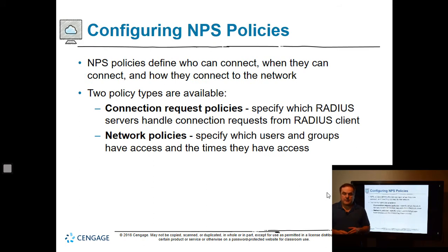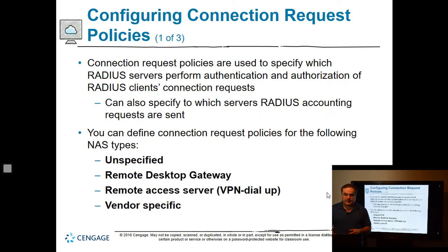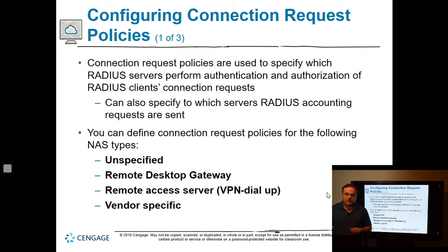There are two different types of policies for NPS: connection request policies and network policies. Connection policies specify RADIUS servers that can handle the connection request — it's got to know where to go. Network policies specify which users and groups have access, and you can lock people down to certain times of day or night. There are four different options: unspecified, remote desktop gateway, remote access server, or a vendor-specific policy.